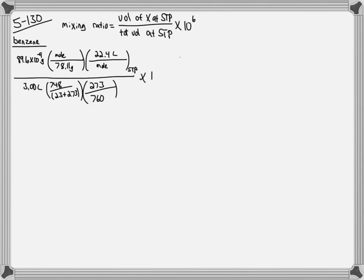We then simply multiply this by 10 to the 6th, and we get 9.44 times 10 to the negative 3 parts per million volume.